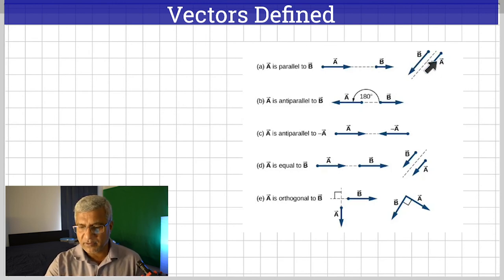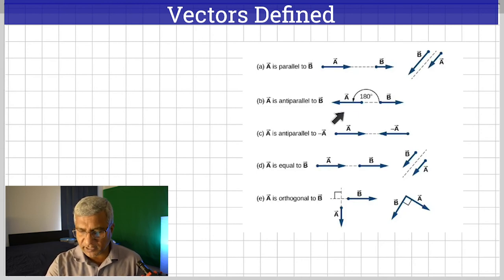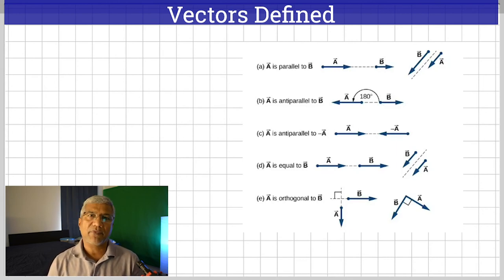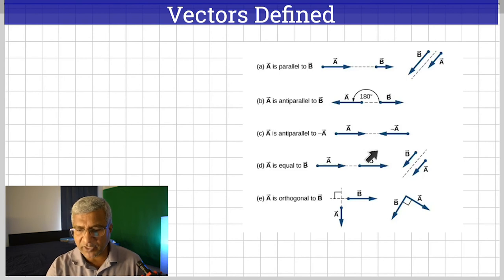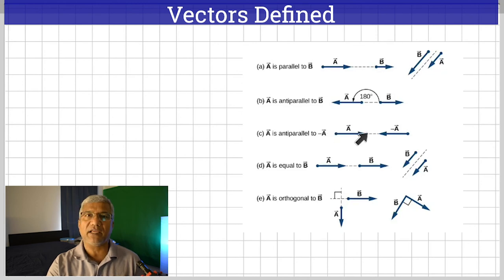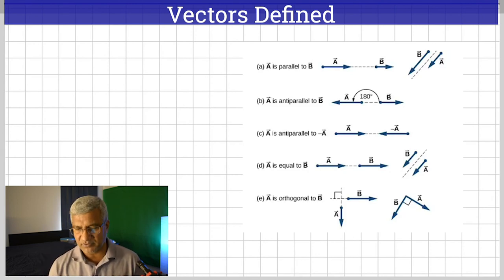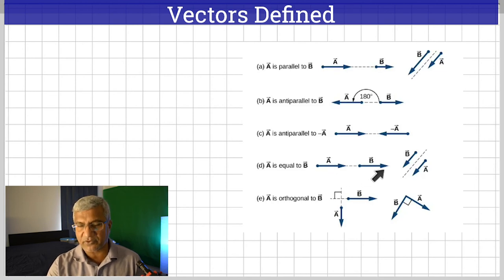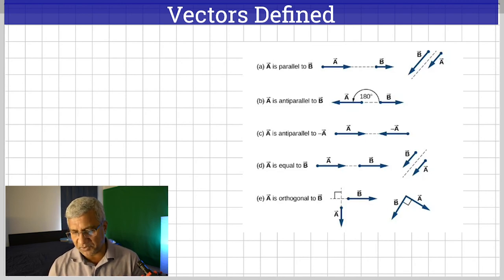In this case, A and B are again parallel, while here B is bigger than A but they are still parallel. On the other hand, in this case A is anti-parallel to B because they are in opposite directions — the angle between them is 180 degrees. Similarly, A is anti-parallel to negative A. Vector A and negative A are the same size but exactly in opposite directions. A and B are equal when their lengths are the same and they point in the same direction.